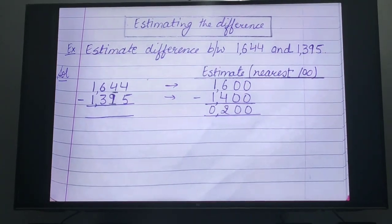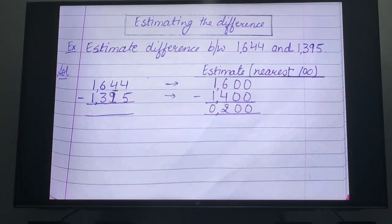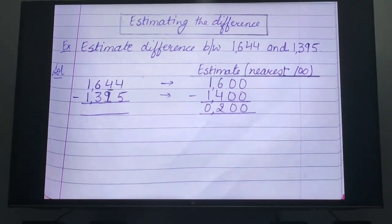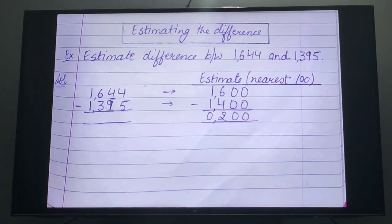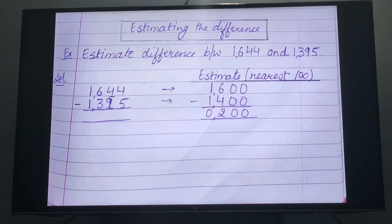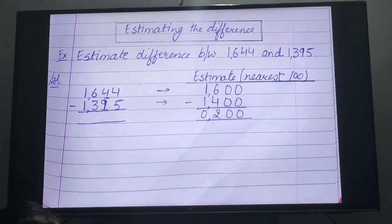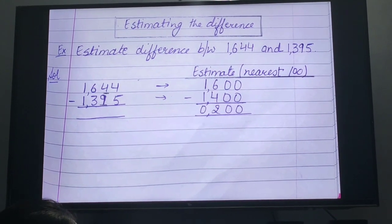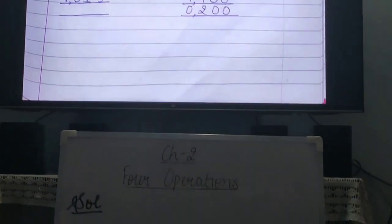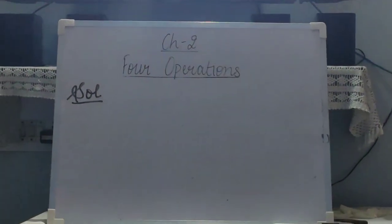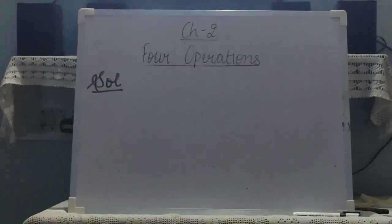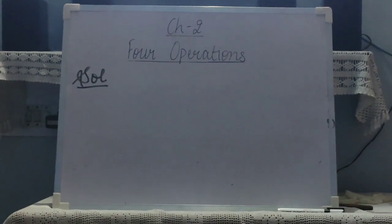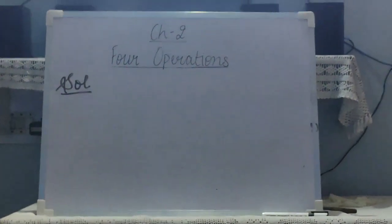The next topic is estimating the difference. Same as estimating the sum in addition, you will round the numbers and then subtract. If a number is a 5-digit number, we round to the nearest 4th place, which is 1,000. But if we have a 4-digit number, we estimate to the 3rd place, which is 100.